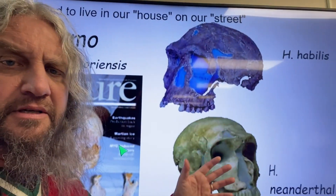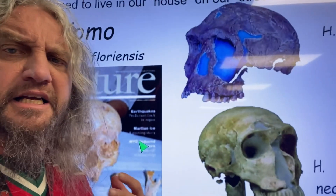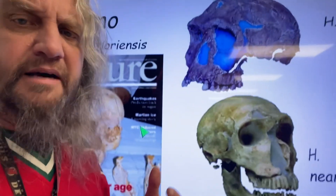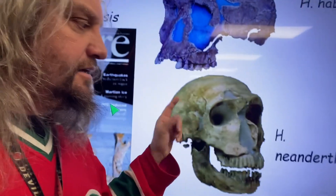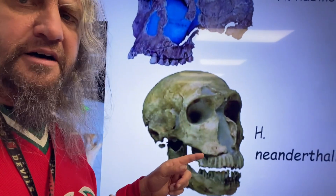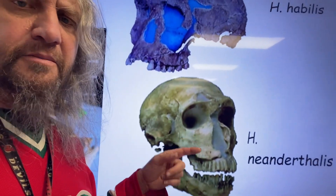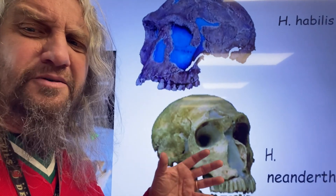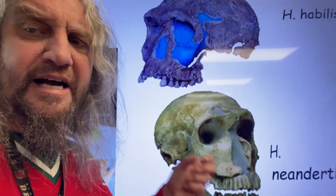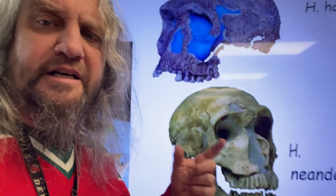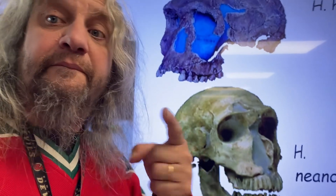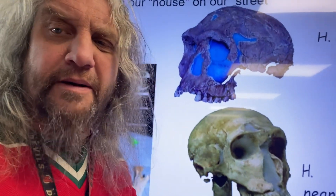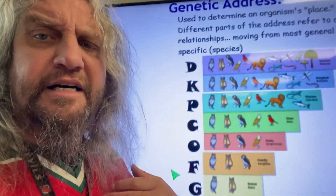Homo habilis, for example — these guys would have been really closely related to us. So close that probably if a Neanderthal, homo neanderthalensis, were to walk into your classroom, you may not even notice it's a different kind of thing. Really closely related. But what makes them a separate species? It has to do with breeding. So that's classification of our kind of thing.